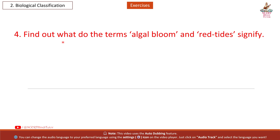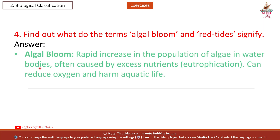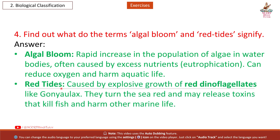Question 4: What do the terms algal bloom and red tides signify? Answer: Algal bloom — rapid increase in the population of algae in water bodies, often caused by excess nutrients (eutrophication); can reduce oxygen and harm aquatic life.